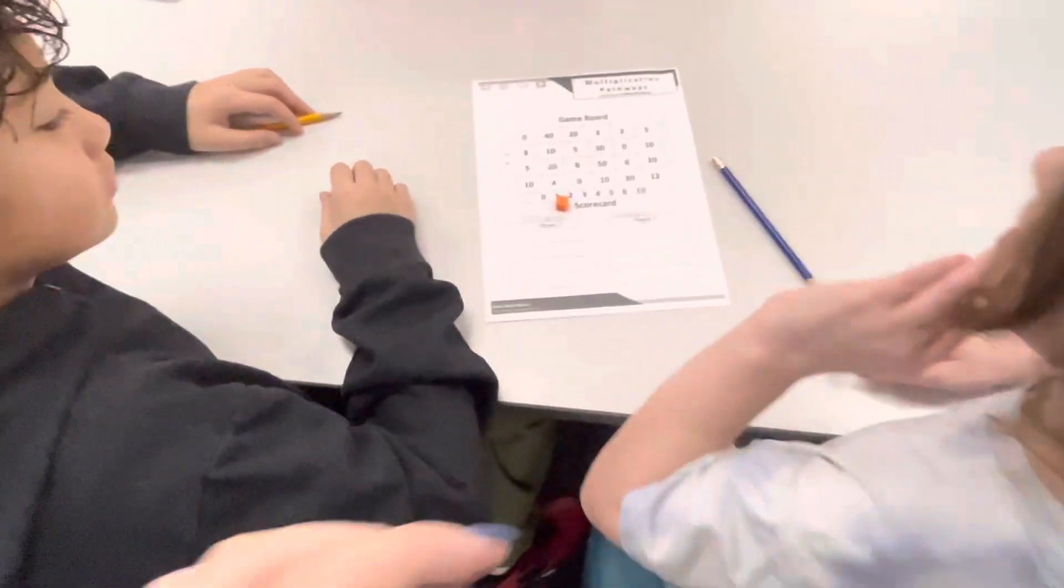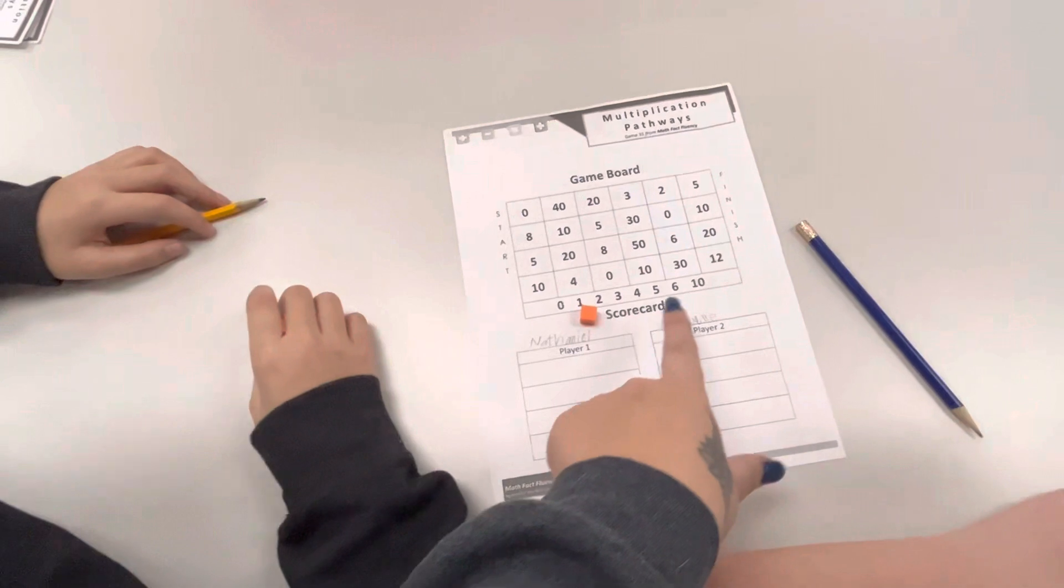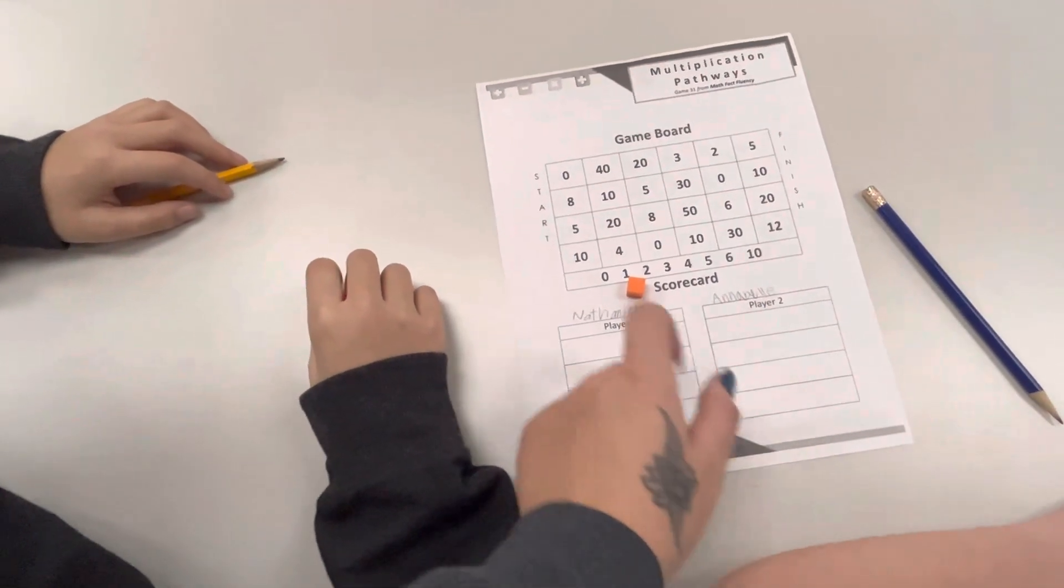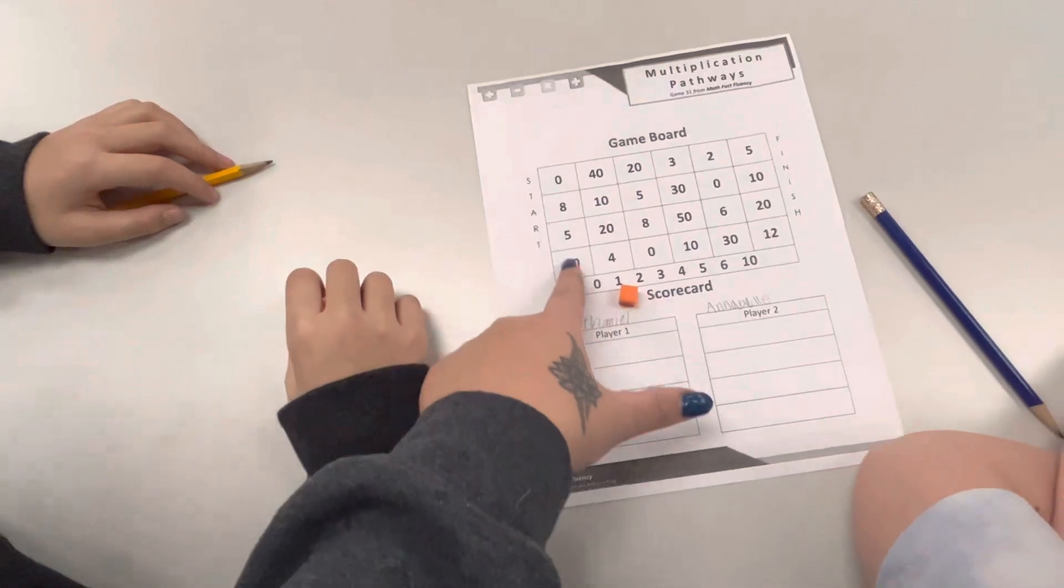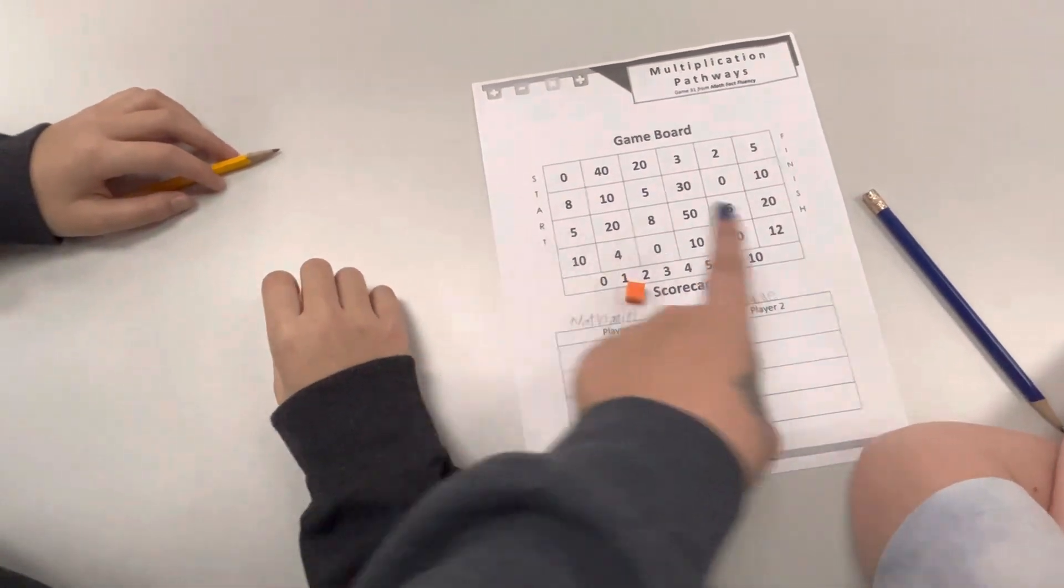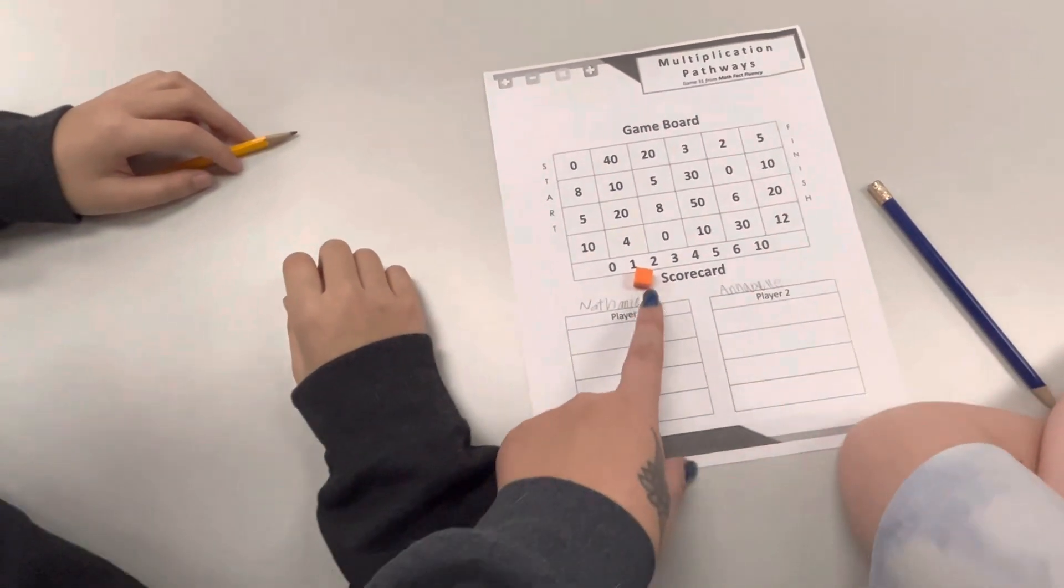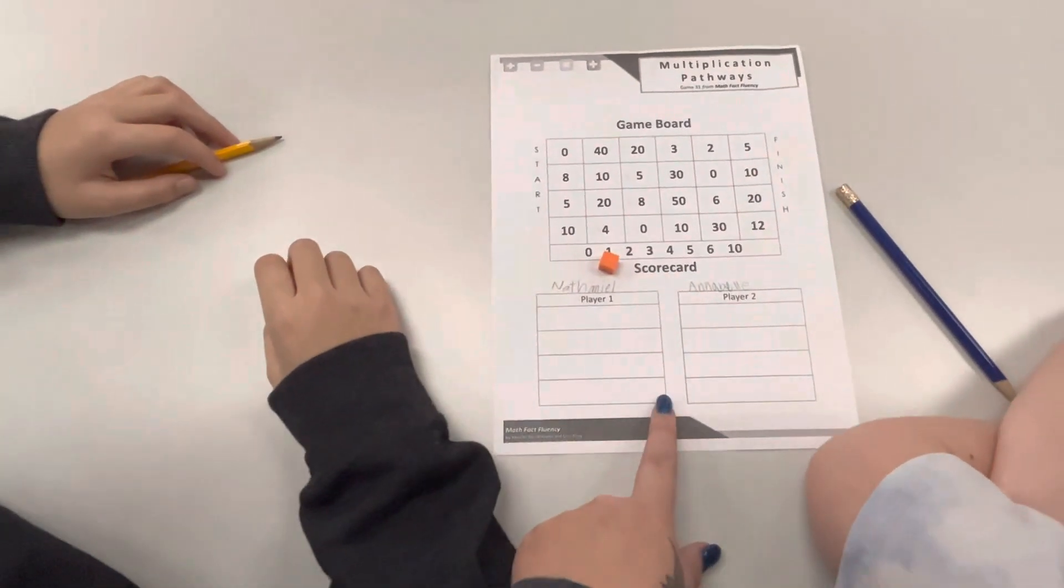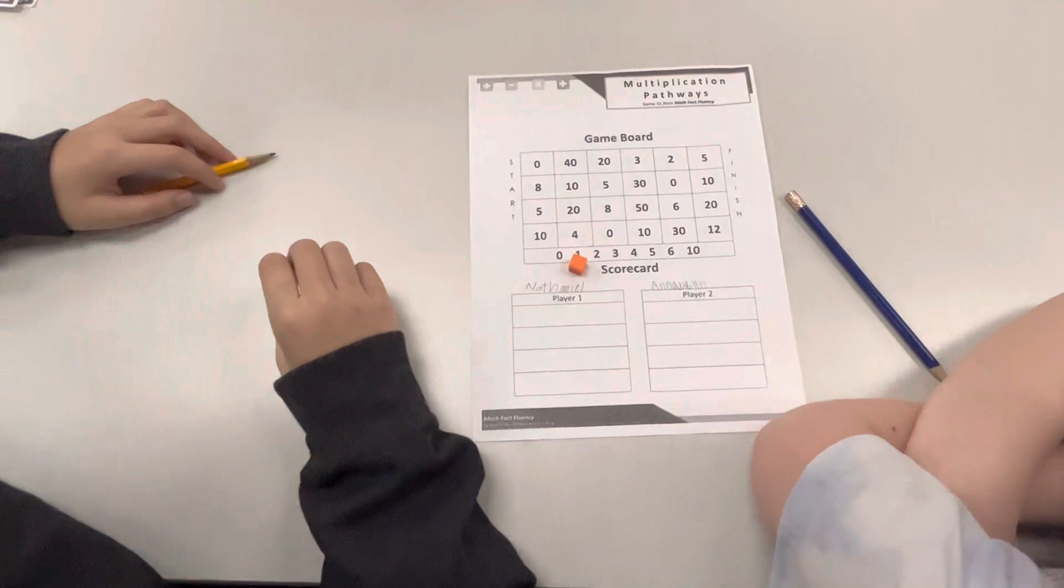Excellent. So for new players, these are going to be our factors. Like Annabelle said, those are the ones you're going to create your multiplication sentence with, and you're trying to get a product that's in this column. This is our start. This is our finish. So Annabelle has placed her unit cube under one, and now Nathaniel gets to place his unit cube on another number.